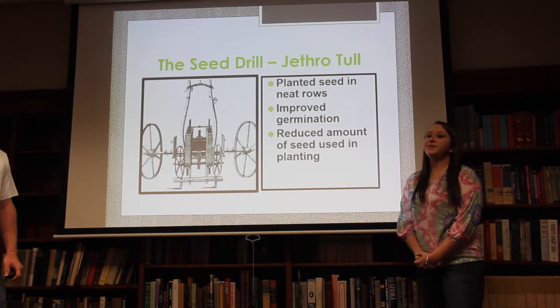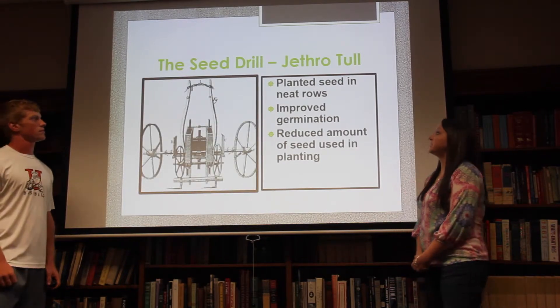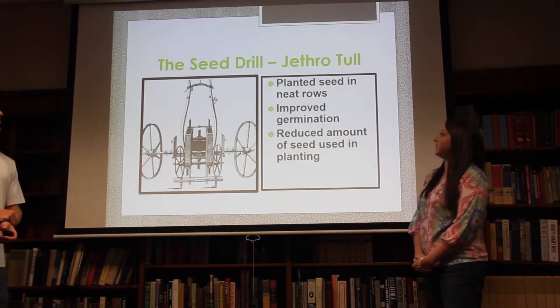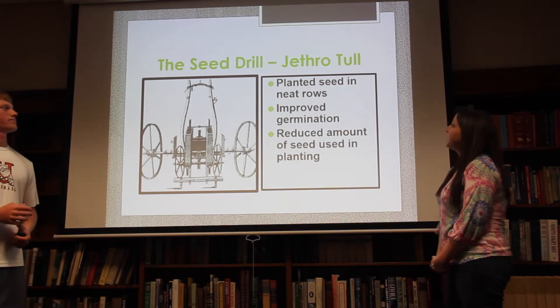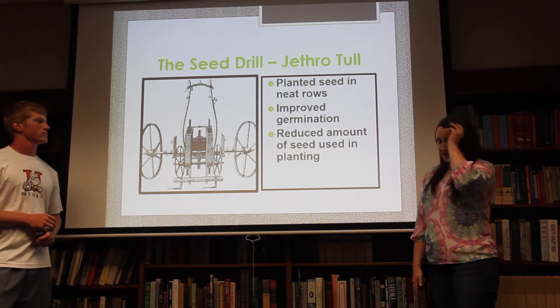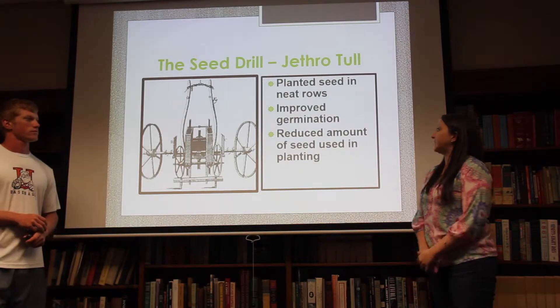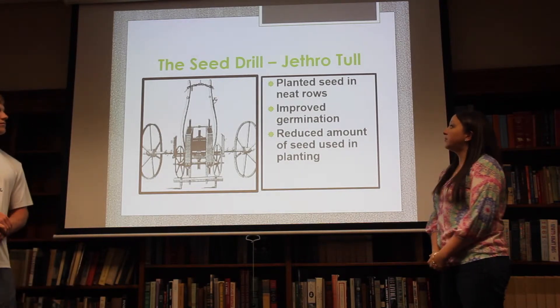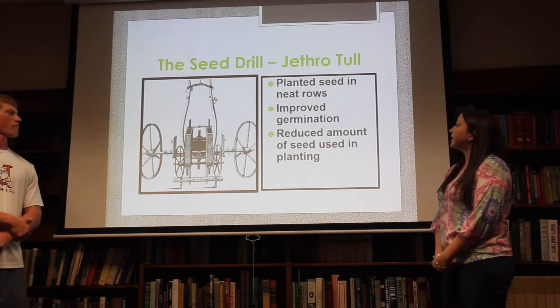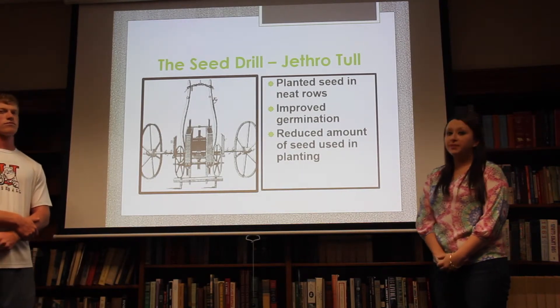One of the main inventions in the agricultural revolution was the seed drill, invented by Jethro Tull. This planted seeds in neat rows so you no longer had to do it by hand. This improved germination and reduced the amount of seeds used in planting.